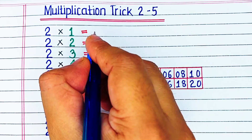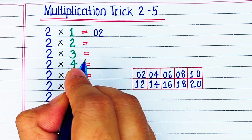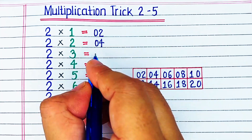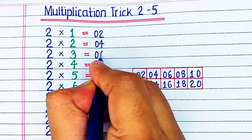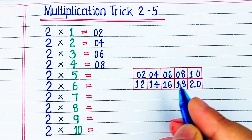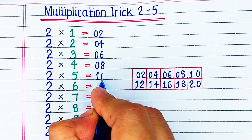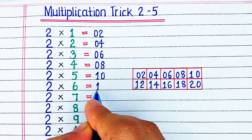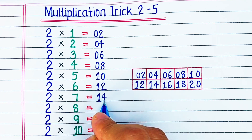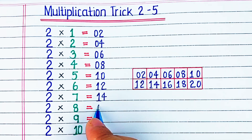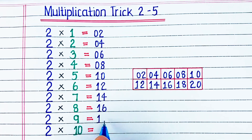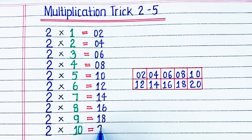Let's write: 2 1s are 2, 2 2s are 4, 2 3s are 6, 2 4s are 8, 2 5s are 10, 2 6s are 12, 2 7s are 14, 2 8s are 16, 2 9s are 18, and 2 10s are 20.